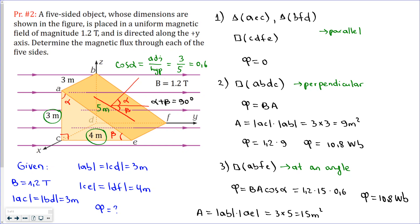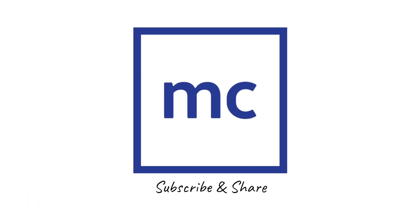The flux through the angled surface ABFE is also 10.8 Weber. We could have found this by deduction: since plane ABFE is at an angle and plane ABDS is perpendicular, the flux through these two surfaces must be the same. This is the end of the lesson — if you liked it, please subscribe and share. Thank you.